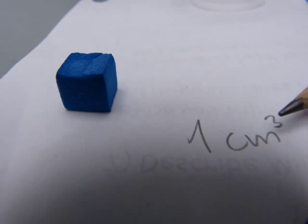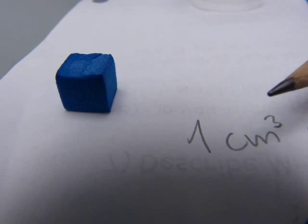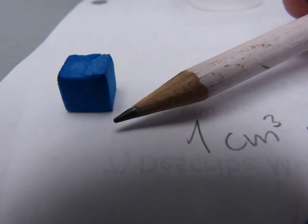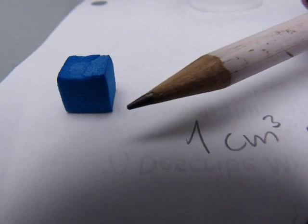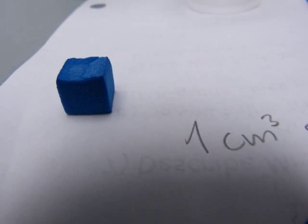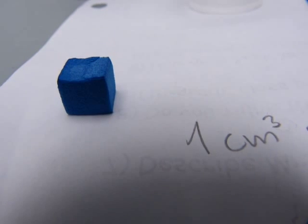This number 3 in the corner indicates that three dimensions were considered that define this amount of space. It is length, width, and height. The amount of space in this foam cube is exactly one cubic centimeter.